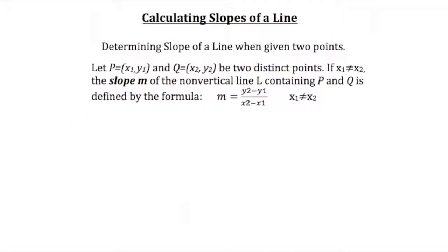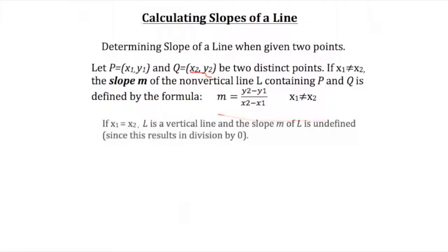The basic definition of slope can be defined as follows. If we have P(x₁, y₁) and Q(x₂, y₂) as two distinct points, then if x₁ does not equal x₂, the slope m of the non-vertical line l containing both P and Q is defined by the formula: slope equals y₂ minus y₁ over x₂ minus x₁. If x₁ does equal x₂, l is a vertical line and the slope m is undefined since this results in division by zero.